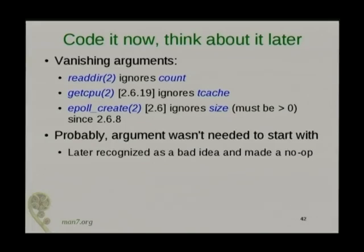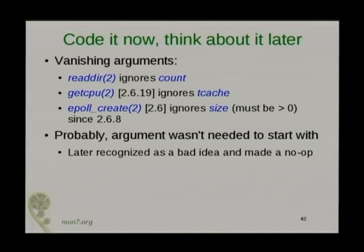So that's bugs. Now in terms of design, there's a whole lot of things that go wrong. One of them is the phenomenon of what I call "code now, think about it later." Here are three system calls that have arguments that nowadays they ignore: readdir, getcpu, epoll_create. At the beginning, someone thought we needed these arguments, and then a while later they realized we don't. Probably, if we thought about it at the beginning, we would never have had those arguments at all. But there wasn't enough review of the design, enough thinking about the design to realize that at the start.